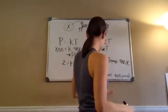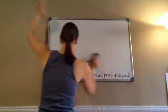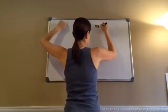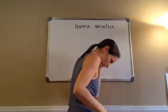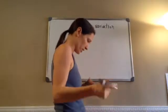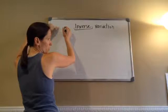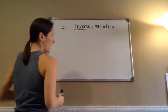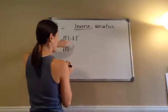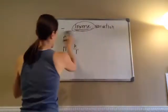Now you've learned about varies directly — remember, everything is multiplied. When you're doing inverse variation, the key words are varies inversely or inversely proportional. Inverse means opposite, so instead of multiplying, you're going to divide. Instead of M equals K times V, it's going to be M equals K divided by V, because it's inverse.